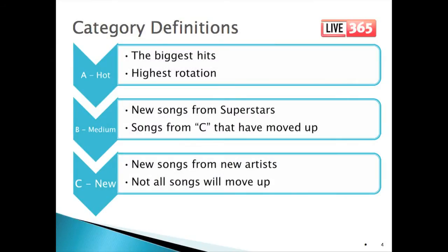So let's take a look at the categories for our Theoretical Contemporary Station. This is a simplified model that includes just a few categories. These are the current categories. We're going to start with the A rotation, or the hot songs. These are the biggest hits on the station. They receive the fastest rotation, and songs rarely start out in A.